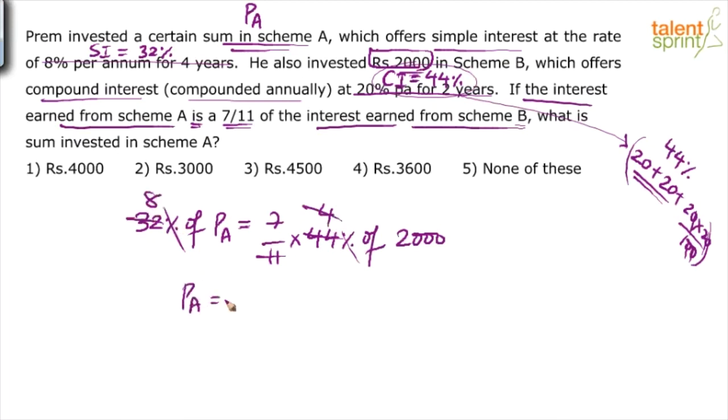So the principal here will be how much? 2000 by 8 into 7. How much is 2000 by 8? 250. 250 into 7? 1750.